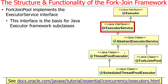We have the Java Executor framework, which has a whole bunch of classes in it, and the ExecutorService is the key interface for that. There's also another interface called Executor, but it's very simple — it has a single method called execute. The ExecutorService is the interesting one, and it defines the methods we're going to be talking about. There's also the AbstractExecutorService, which implements this and provides a bunch of helper methods used by other classes.